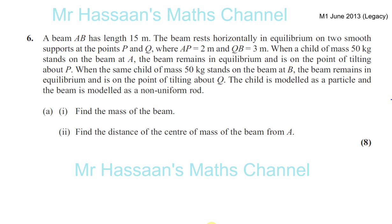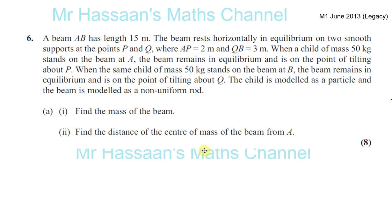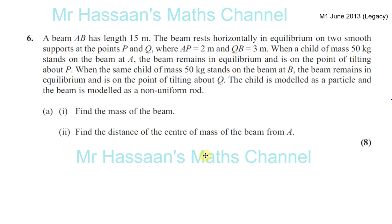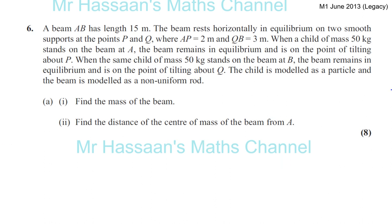So now we have question number 6 from June 2013, legacy paper, the GCE paper. A beam AB has length 15 meters. The beam rests horizontally in equilibrium on two smooth supports at the points P and Q, where AP is 2 meters and QB is 3 meters. So let's just start drawing this.